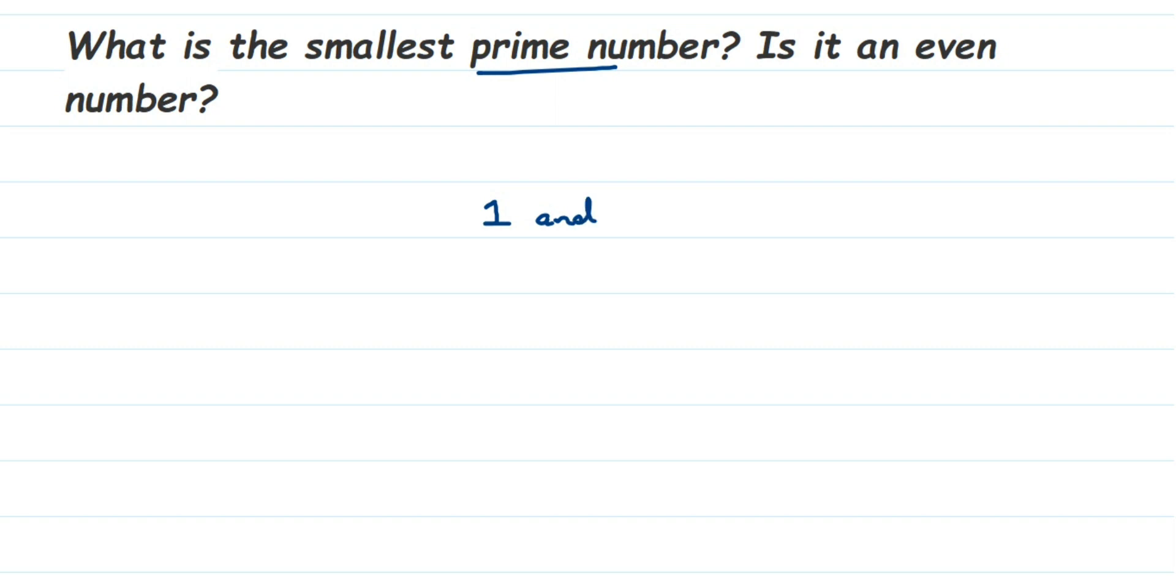For example, let me take 5. 5 is a number and it has two factors. If you don't understand the word factor, we can say in which all tables the 5 comes. 5 comes in the one table and 5 goes in its own table, the 5 table. So it has only two factors: 1 and the number itself, 5. Those numbers are called prime numbers.